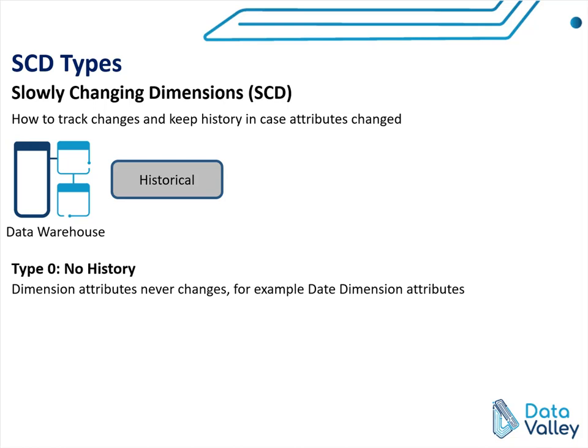The first type is Type 0, which has no history. Whenever data changes in the source system, we will not change data in our data warehouse. So dimension data will remain the same — it will be fixed and will not be affected by any change in the source system data.